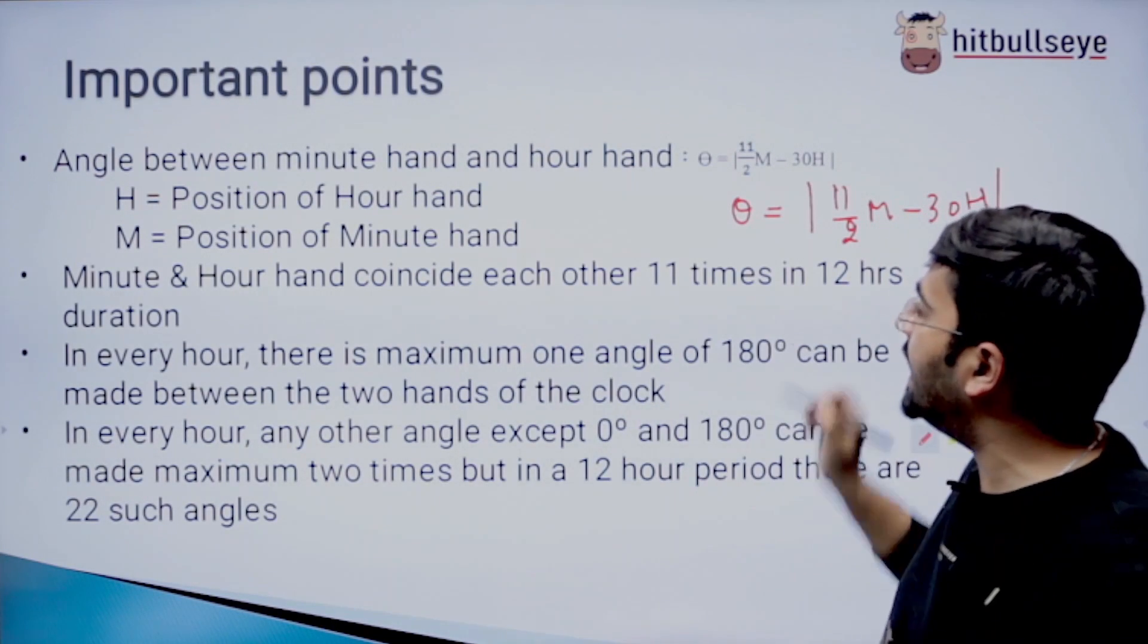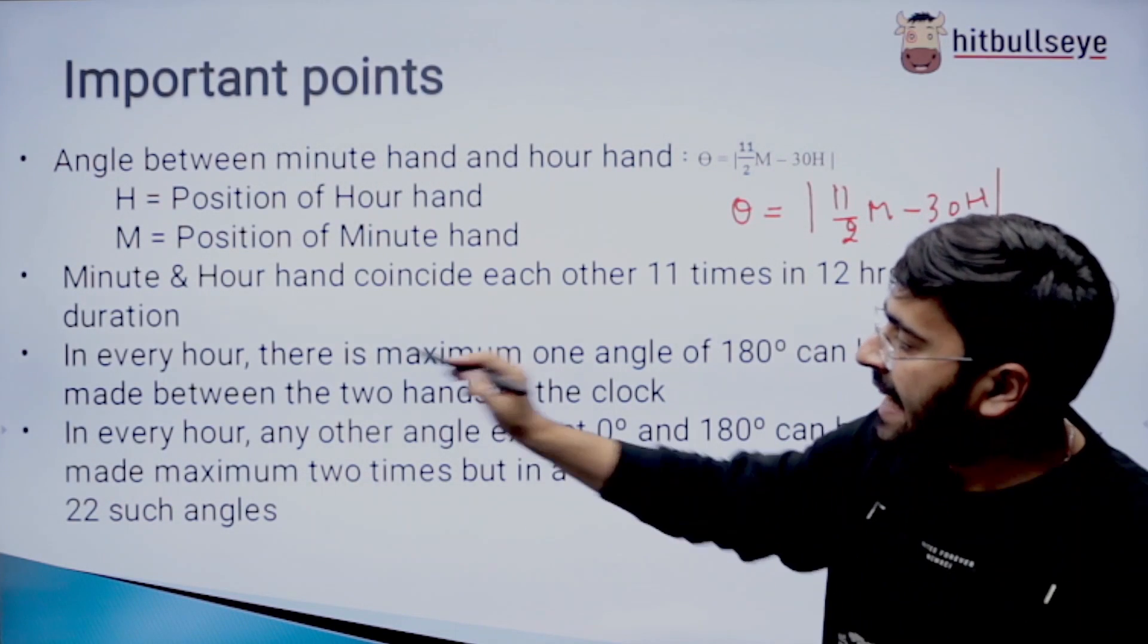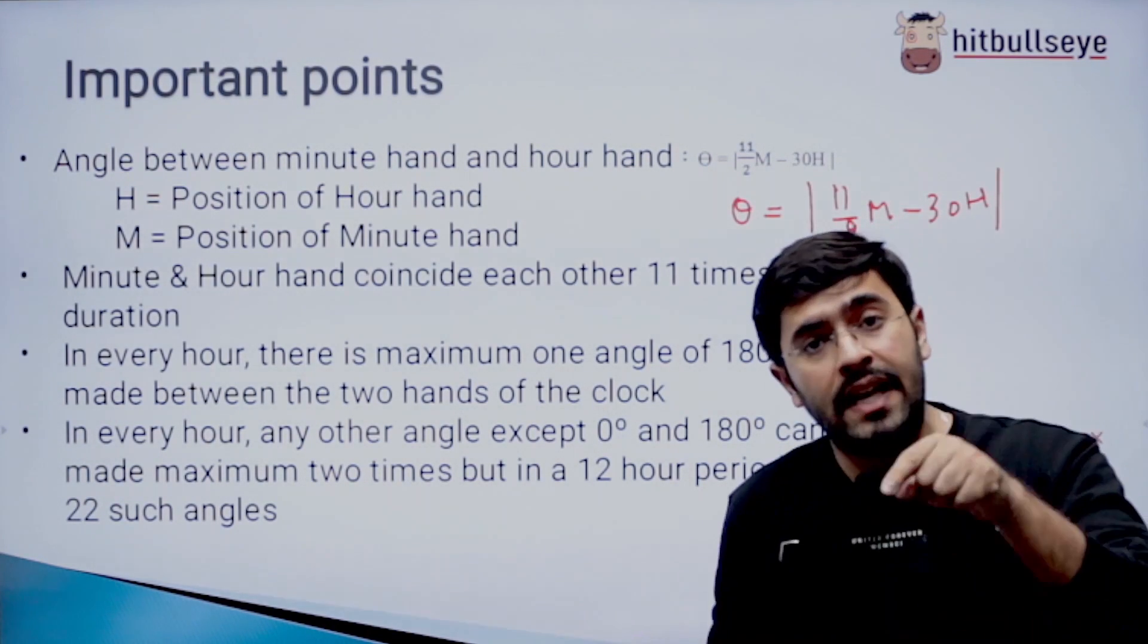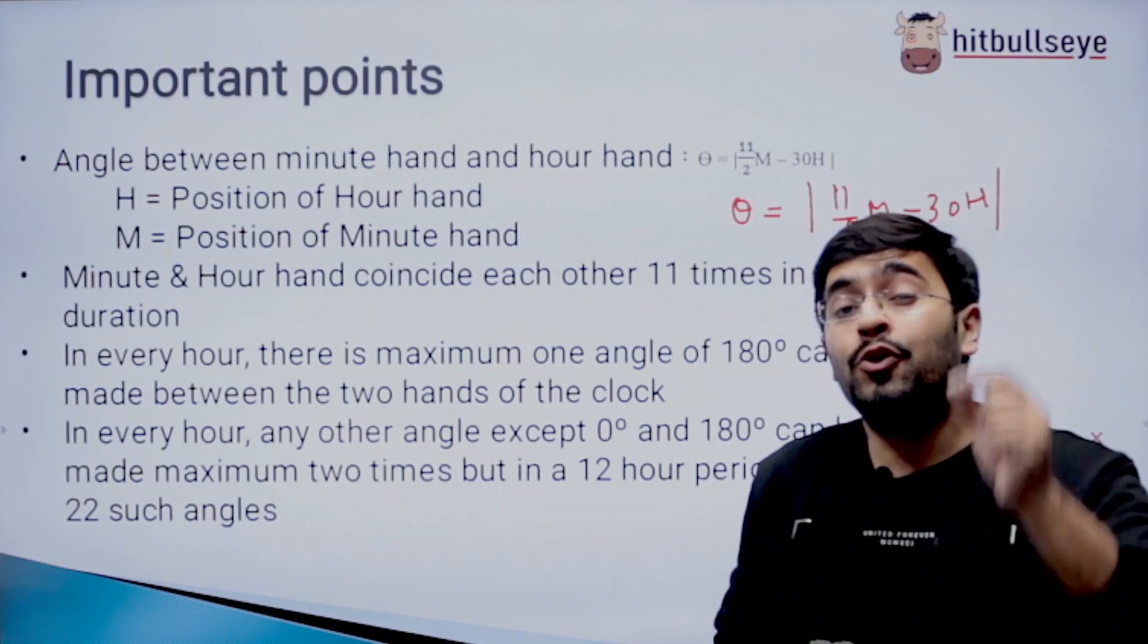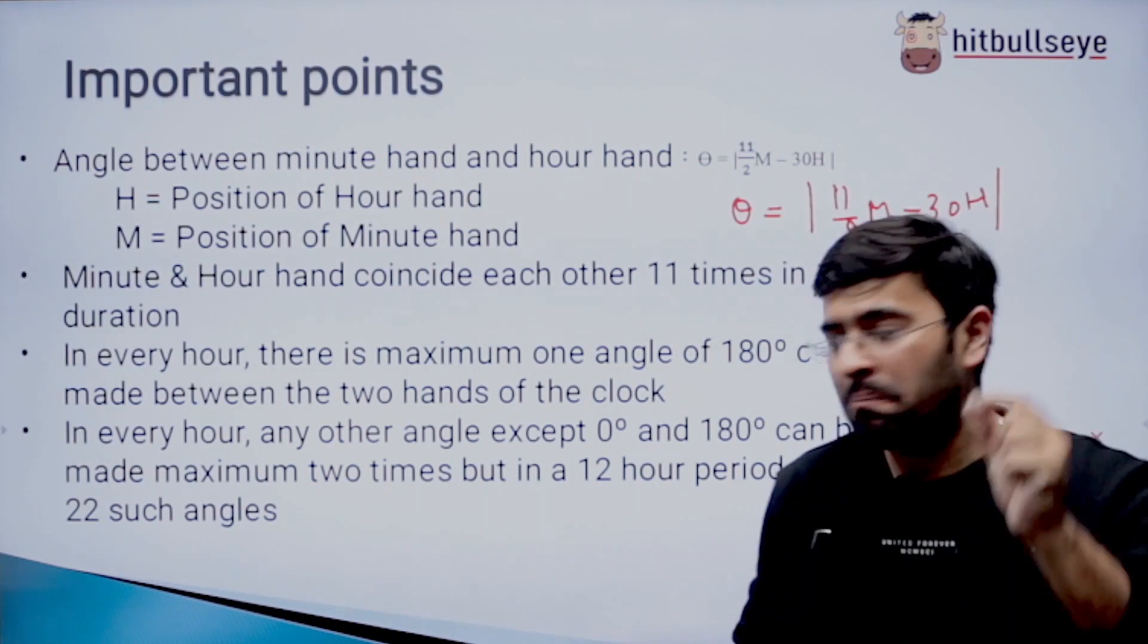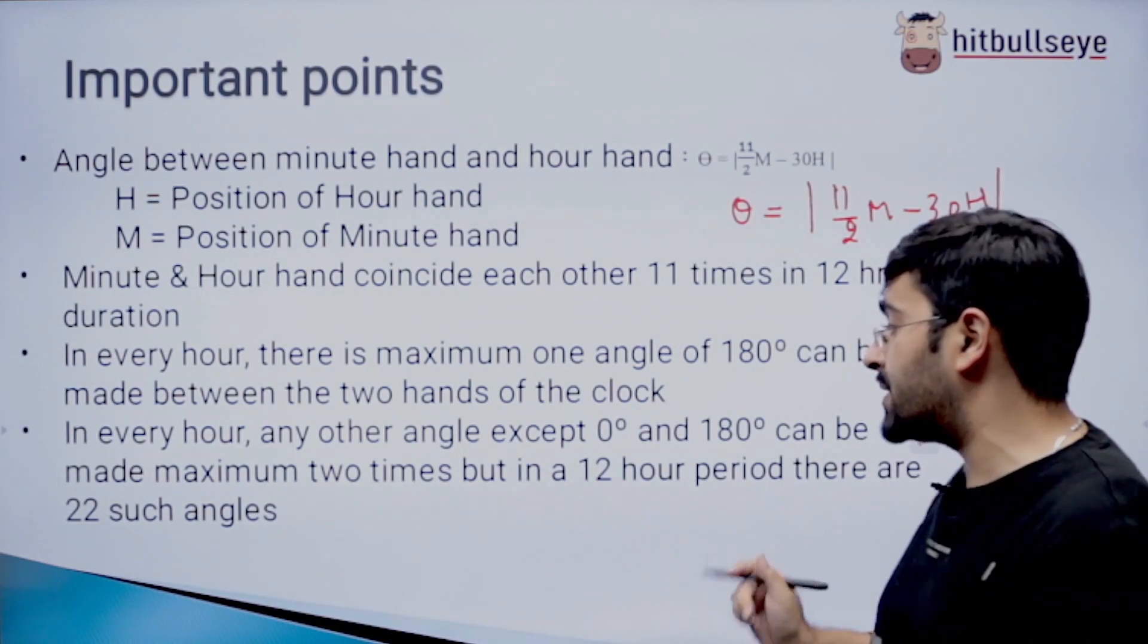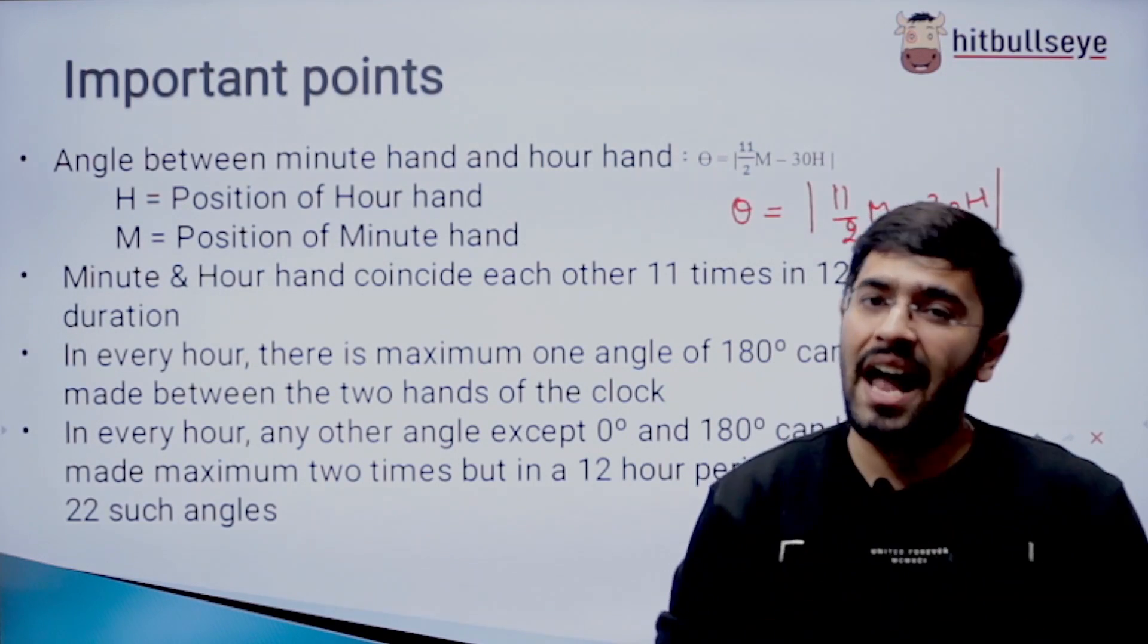The minute and the hour hand coincide each other 11 times in a total of 12 hour duration. In every hour there is a maximum one time angle of 180 degrees. In every hour, any other angle except 0 and 180 degrees can be made maximum 2 times, but in a 12 hour period there are 22 such angles.